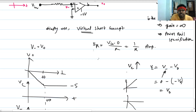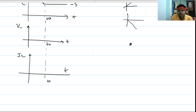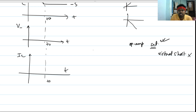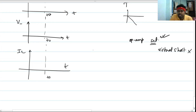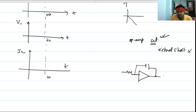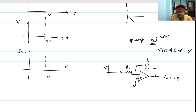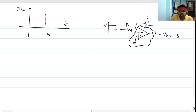Once the op-amp is in saturation, the virtual short concept is no longer valid and cannot be applied. After t equals t_0, the op-amp is saturated with V_out fixed at minus 5 volts. The circuit now simplifies — the op-amp acts as a fixed voltage source of minus 5 volts, and we just have an RC circuit.